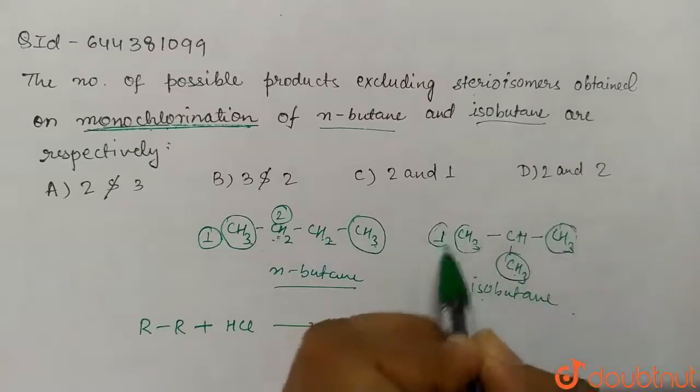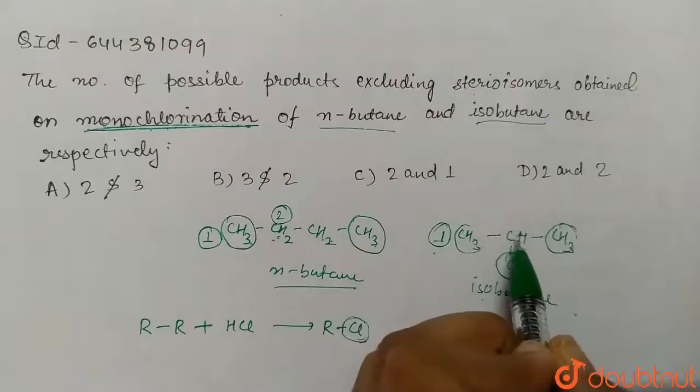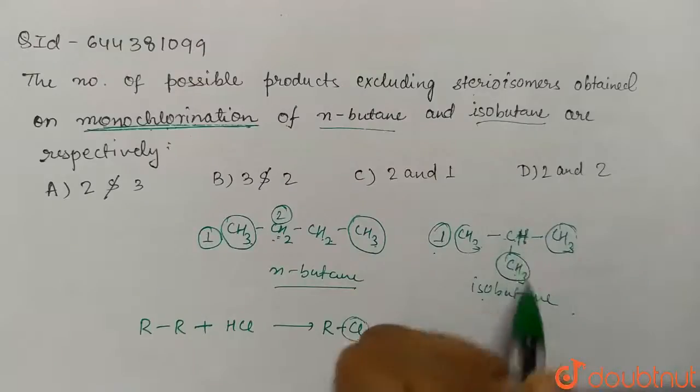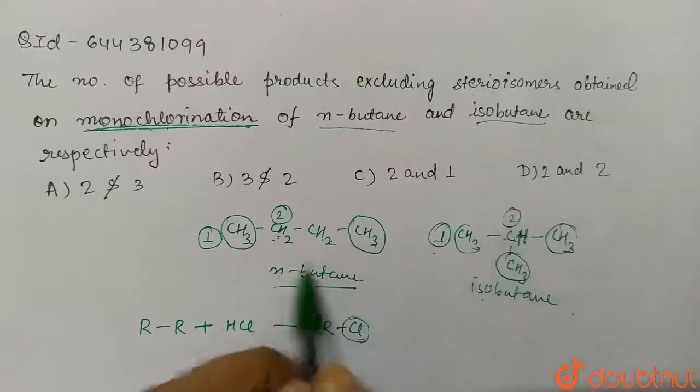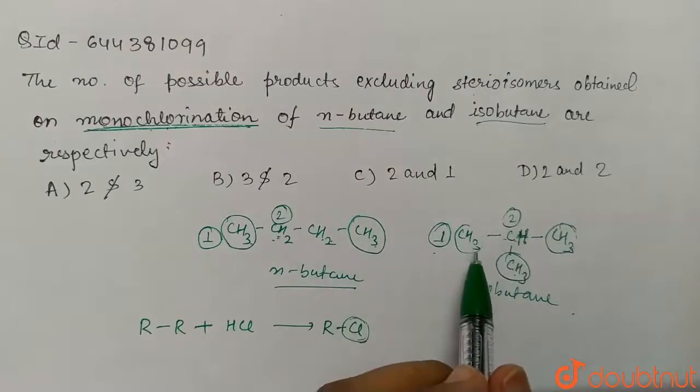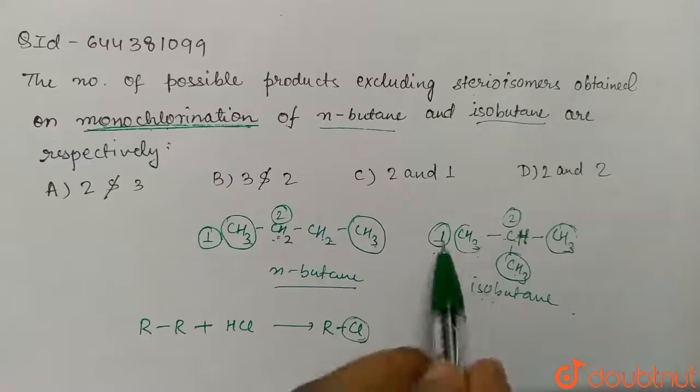These will form one type of monochlorinated product, and this carbon will form one type of monochlorinated product since it has only one hydrogen. So here two.